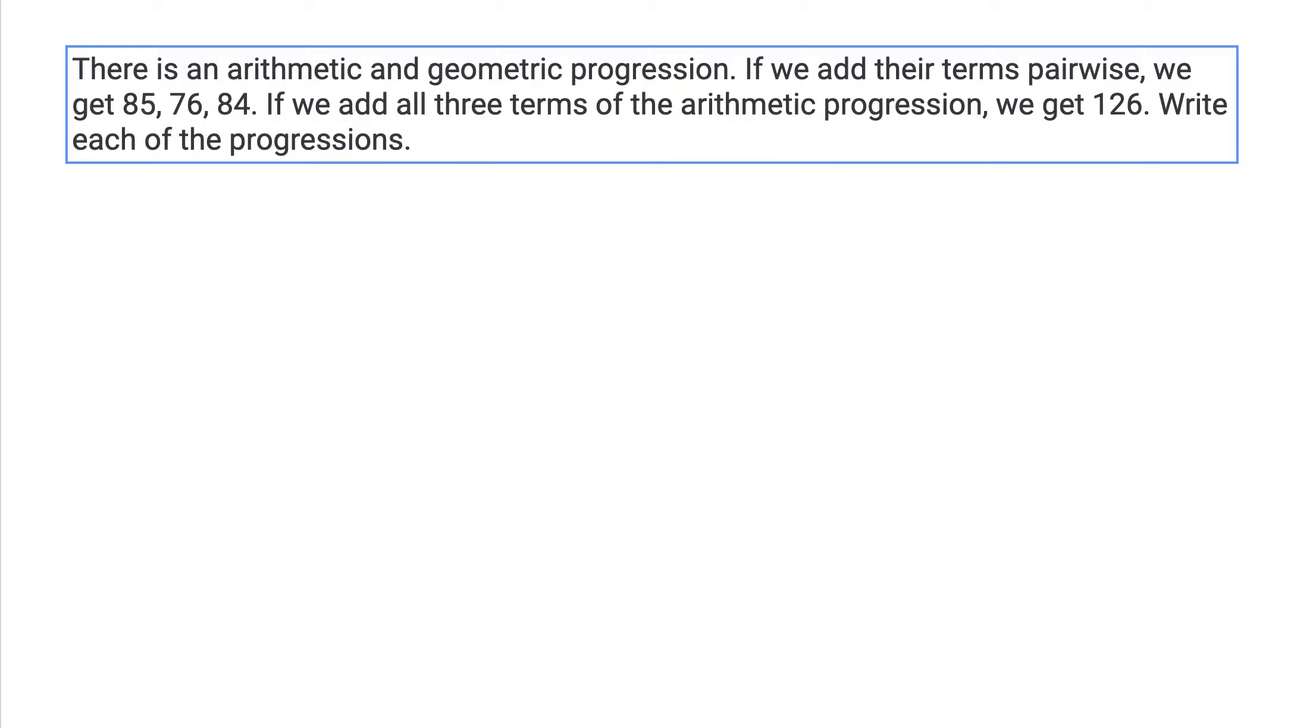Today we're going to consider question 2 from a Stanford Mathematics contest, set 3. There is an arithmetic and geometric progression. If we add their terms pairwise, we get 85, 76, 84. If we add all three terms of the arithmetic progression, we get 126. Write each of the progressions.